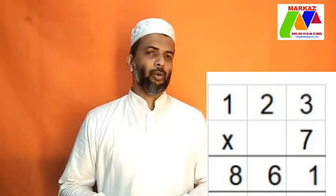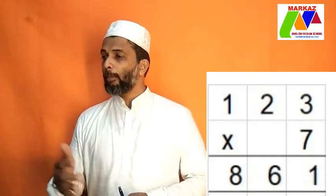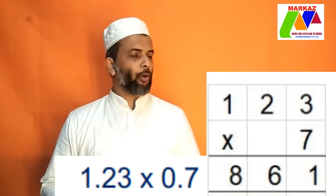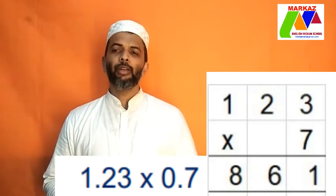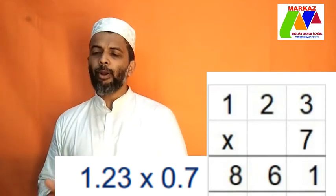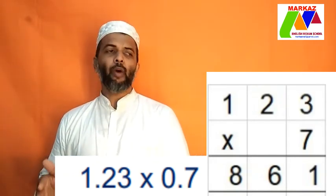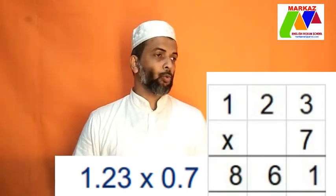The next step is to put the decimal point at the correct place. To find out where to put the decimal point, you have to count the number of digits after the decimal point in both the multiplier and the multiplicand. In 1.23, how many digits are there after the decimal point? There are two digits. And 0.7, there is only one digit. So you have to add the number of digits in the multiplier and the multiplicand. You have two digits in the first one and one digit in the second one. Therefore, the total number of digits after the decimal point is equal to 2 plus 1, which is 3.